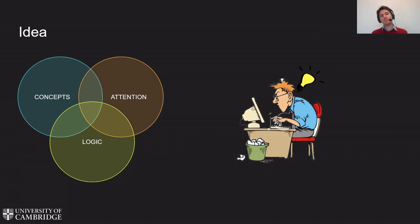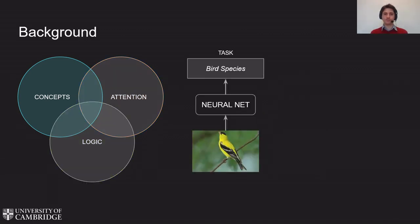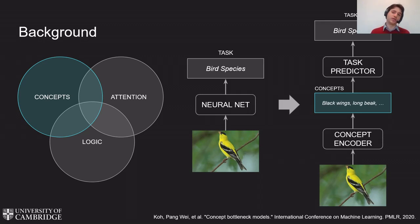With concept bottleneck models, we can split any end-to-end architecture in two parts: a concept encoder and a task predictor. The concept encoder maps raw inputs like image pixels into an intermediate set of high-level human-like features we call concepts. Such concepts can be colors, shapes, a feature that is more interpretable than image pixels, but not the final task.